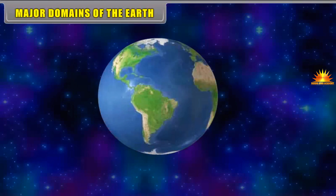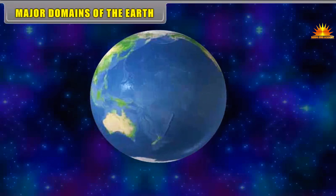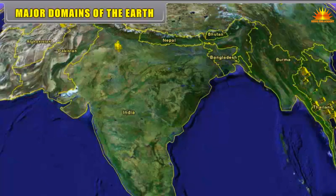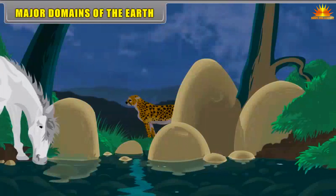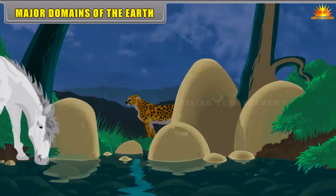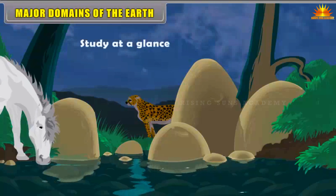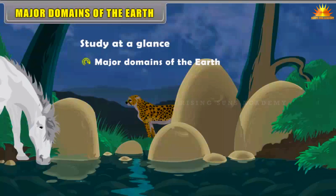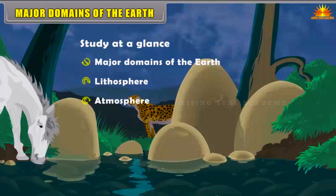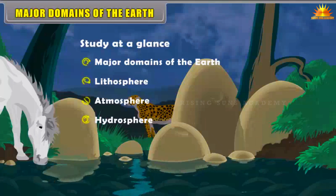Our Earth has a unique distinction of being at a reasonable distance from the Sun. The Earth provides a suitable environment which is favorable for the origin and sustenance of all types of life — Human Life, Plant Life and Animal Life. The major domains of the Earth are Lithosphere, Atmosphere, Hydrosphere, and Biosphere.